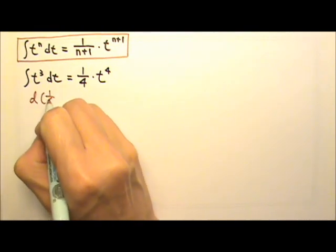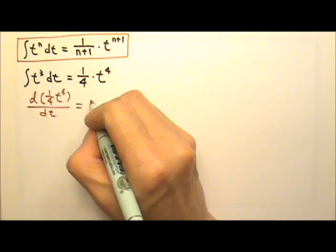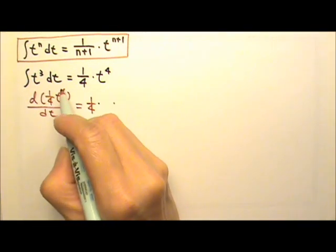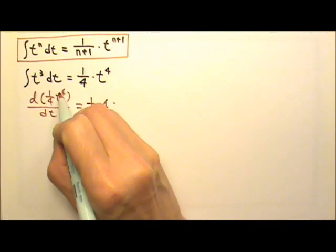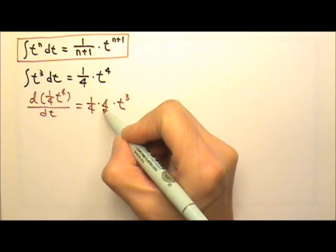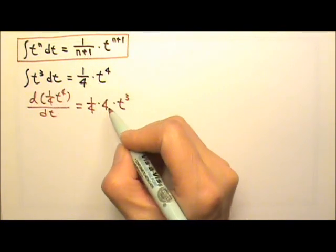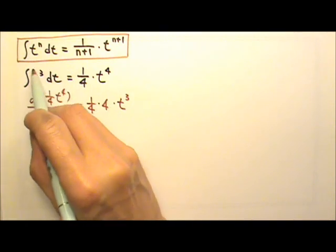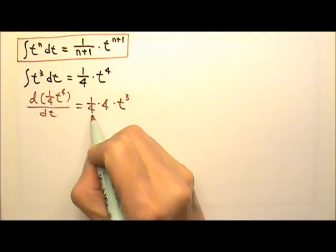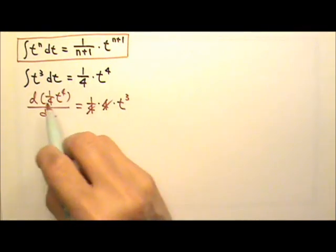So let's try it. If I take the derivative of one-fourth t to the fourth dt, then one-fourth, the constant coefficient, stays right there. When we take the derivative, we bring this exponent down — four — and then we lose one degree of power, so we get t to the third. This is the reason why we have to have 1 over n plus 1 here. Because when we take the derivative of t to the fourth, we get a four on the side, but here we do not have four times t to the third. So we multiply by one-fourth so we can cancel the four with the one-fourth, and now the derivative is t to the third.